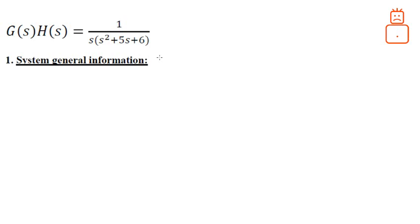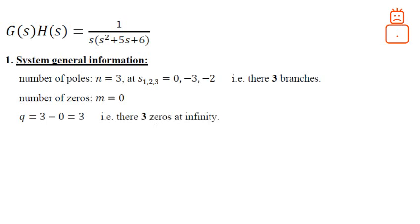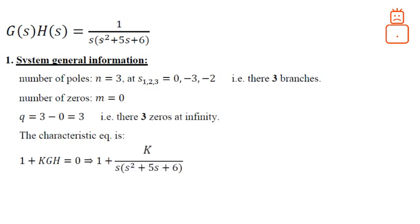First, we take some system information. We need to know the number of poles — we have three poles here, n equals 3. We have poles at 0, -3, and -2. This means we will have three branches. We don't have any zeros, so m equals 0. The difference between the numbers of zeros and poles is 3, meaning we have three zeros at infinity. The characteristic equation is given by 1 + kGH = 0, where k varies from 0 to infinity.